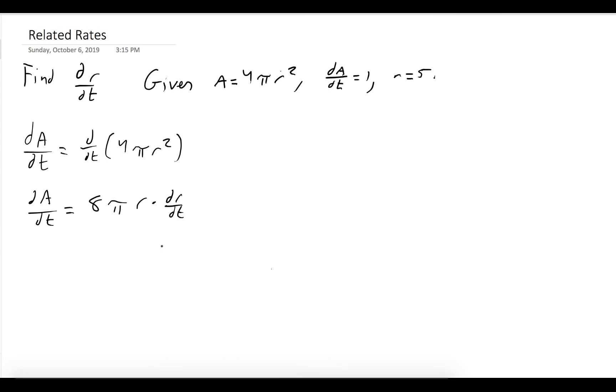Okay, and so our question boiled down to, can we find dr/dt? Well, there it is. So let's get it by itself, and then we'll plug in the information that we were given. So we'll divide by 8 pi r, so we get dr/dt is equal to 1 over 8 pi times 5, which is equal to 1 over 40 pi.